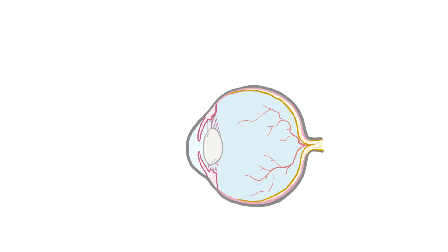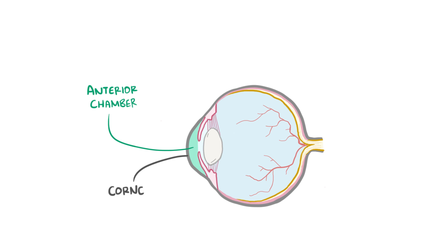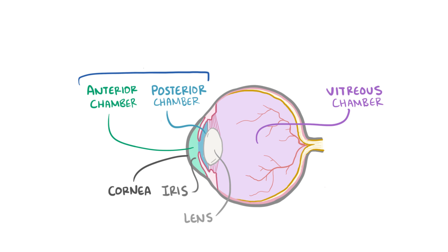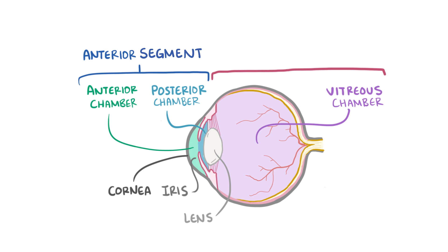Taking a closer look at this cross-section of the eye, you can see that it's split up into different chambers. The anterior chamber includes the area from the cornea to the iris, the posterior chamber is this really narrow space between the iris and the lens, and then this larger vitreous chamber includes the space between the lens and the back of the eye. Both the anterior and posterior chambers are located in the anterior segment of the eye, while the vitreous chamber is part of the posterior segment of the eye.